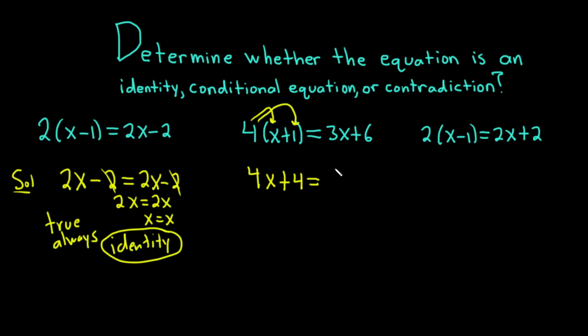And here we have equals, and then 3x plus 6. We could solve this for x by subtracting 3x from both sides. So minus 3x minus 3x. And subtracting 4 from both sides. So minus 4 minus 4.